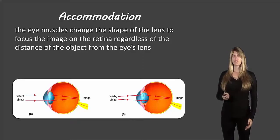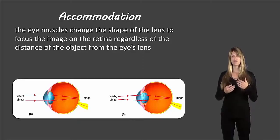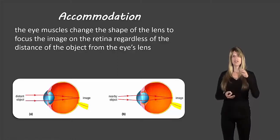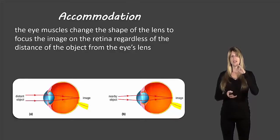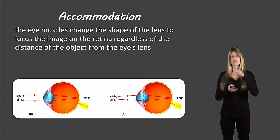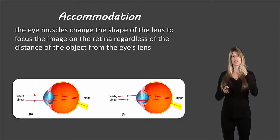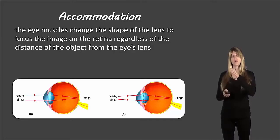In order for us to be able to see things that are near to us and far from us, our eye needs to be able to change shape slightly. The lens has muscles above and below it that can contract or relax to change the shape of the lens. Since the lens is squishy, it can allow light rays to converge either more strongly or more weakly, and that affects how we see the image.